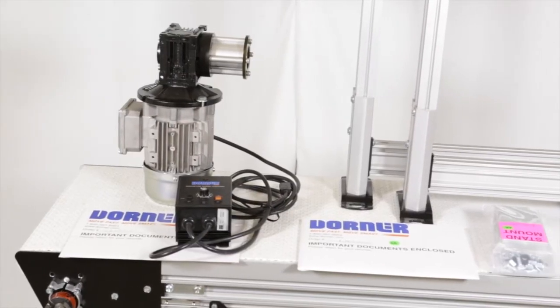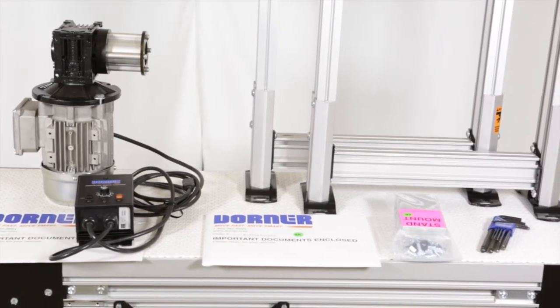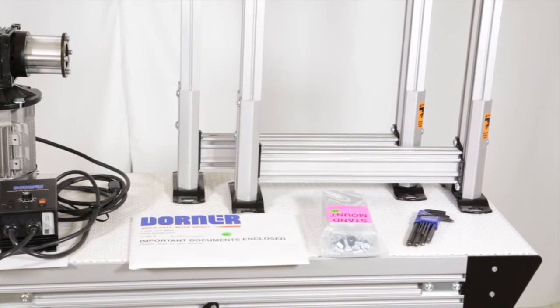Upon receiving your Dorner conveyor, unpack all items and ensure all required parts are included. You'll need a set of metric allen wrenches.